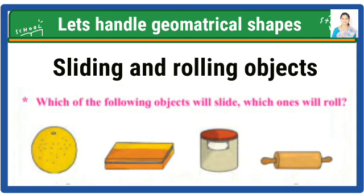Which of the following objects will slide, which one will roll? A lemon has curved surface, so lemon will roll. A book has flat surface, so a book will slide.